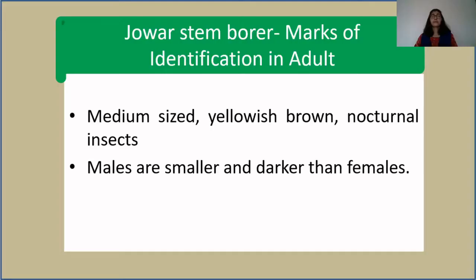Jawar stem borer: marks of identification in adults. How will you identify adults of Jawar stem borer by looking at the external morphology? These insects are medium in size, yellowish brown in color, and nocturnal. Males are smaller and darker than the females.